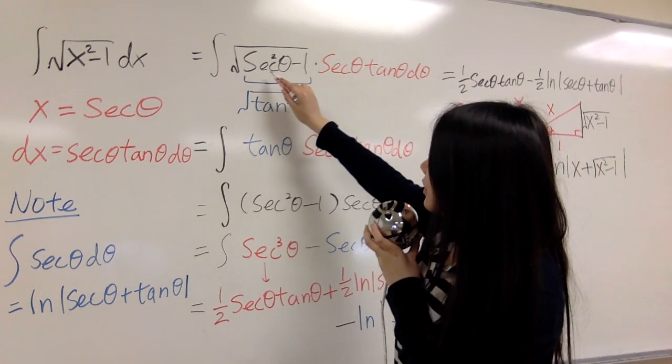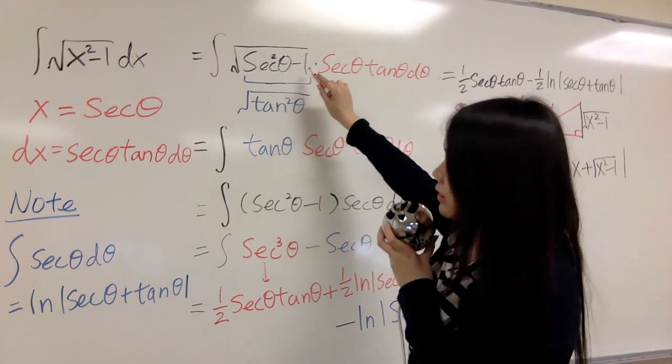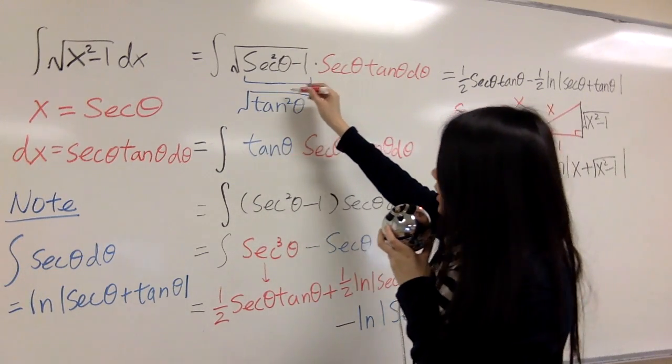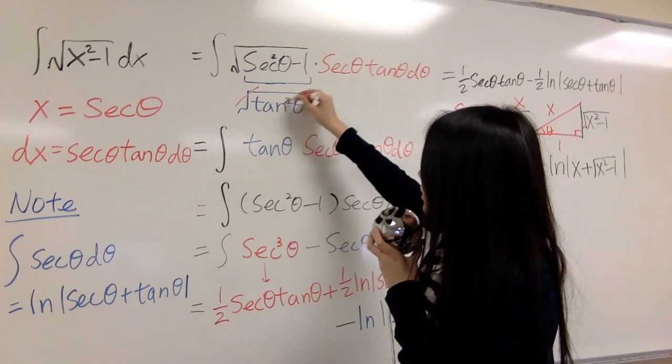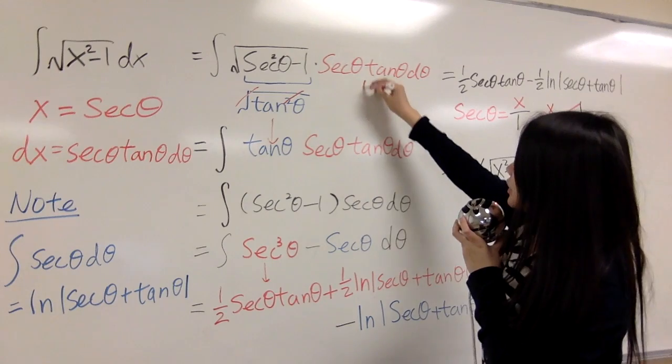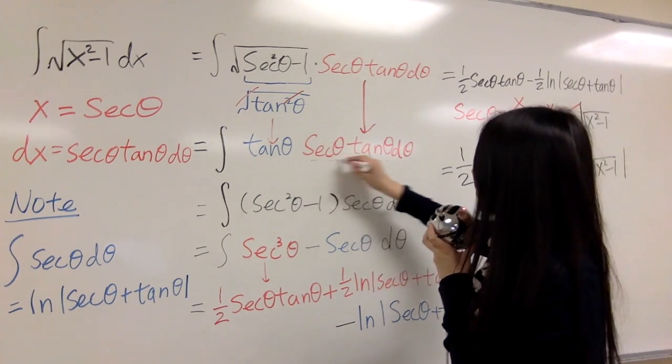Secant squared theta minus 1 equals to tangent squared theta, and then you can cancel your square root which is tangent theta, and rewrite it here.